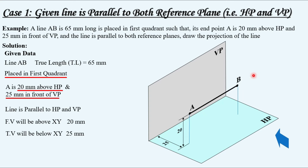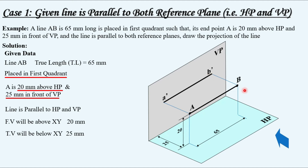Looking from the front, the line AB projects onto the vertical plane giving front view points A' and B'. Similarly, looking from the top, the line AB projects onto the horizontal plane giving top view points A and B. The line joining these projected points gives the top view of line AB. The front view points A' and B' and their corresponding top view points lie on the same vertical projector lines.